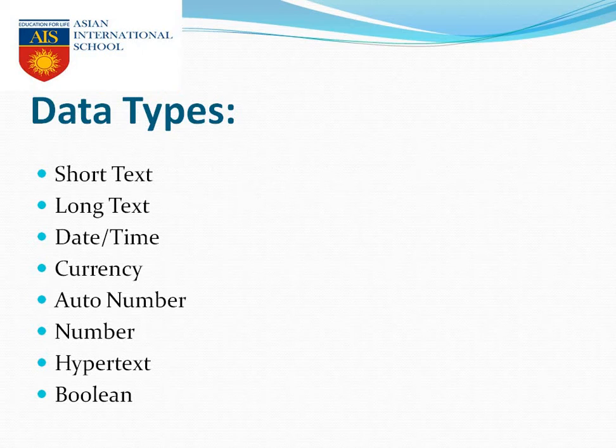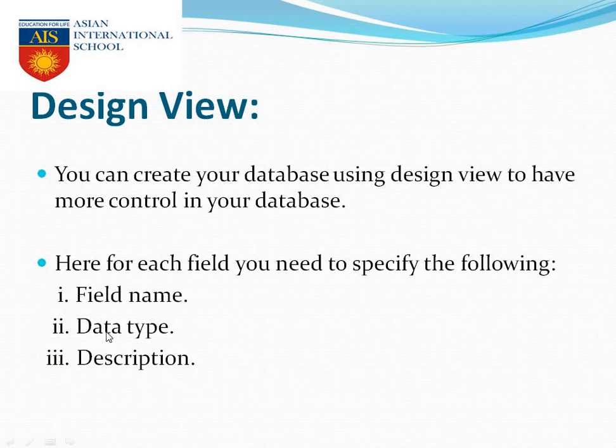Now, a few types of data types. First is short text — short text is used when the text size is very small, like in case of gender it will take either female or male, so we can put either F or M. We can store it using short text. Long text is used when we have to put a whole name of the student where the size of the name varies. Date and time is used for date-related fields. Number can be used for mobile phone numbers.